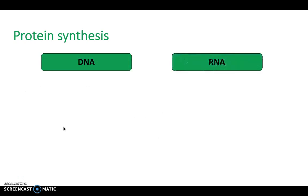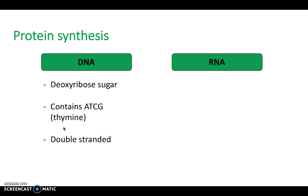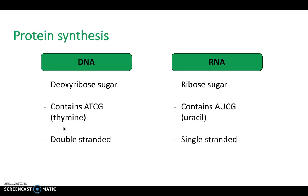We have DNA and RNA — what is the difference? DNA has deoxyribose sugar, it contains A, T, C, and G — remember T stands for thymine — and it's double-stranded. In comparison, RNA has a ribose sugar as opposed to deoxyribose, it contains U instead of T, and it's single-stranded instead of double-stranded.